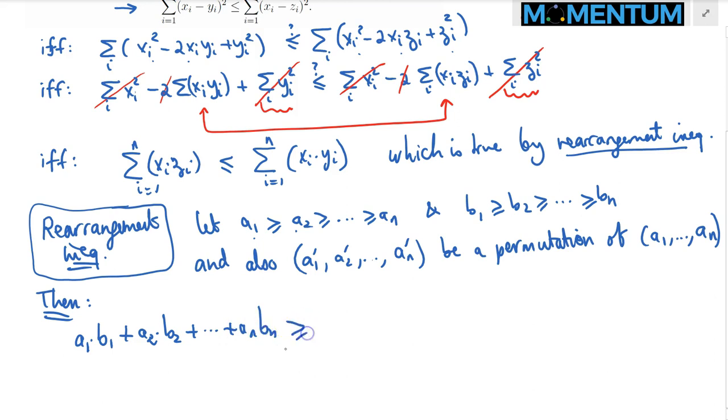This is greater than or equal to any permutation of a i's. a 1 prime times b 1 plus a 2 prime times b 2, all the way up to a n prime times b n. And indeed, this is in turn greater than or equal to shuffling it in opposite direction. So a n times b 1 plus a n minus 1 times b 2, all the way up to a 1 times b n.